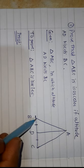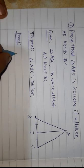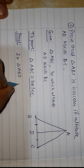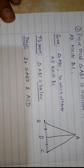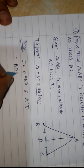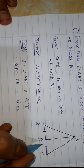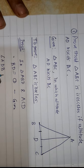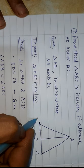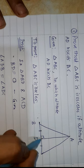We are going to think about triangle ABD and triangle ACD. In triangle ABD and triangle ACD, we have BD is equal to CD — that is given. Then angle ADB is equal to angle ADC, and this is 90 degrees.